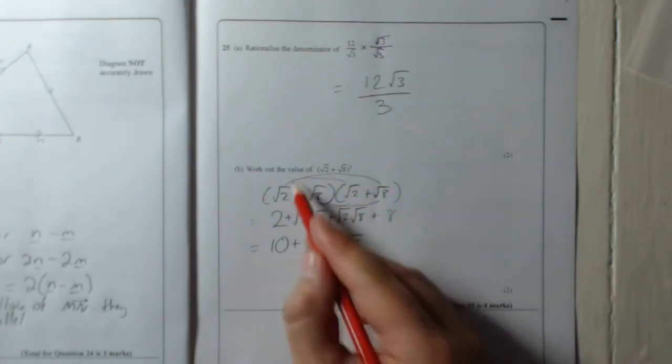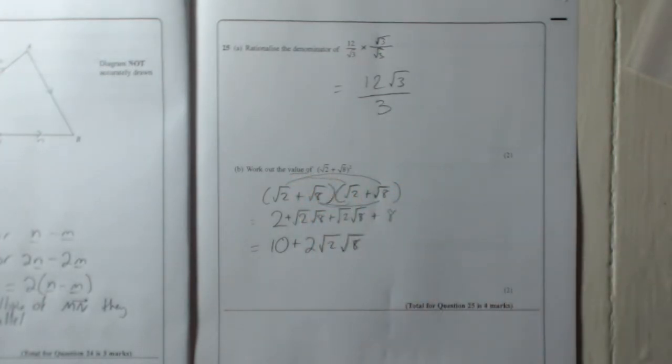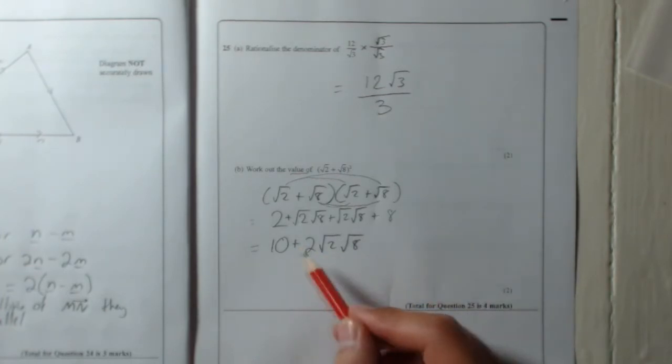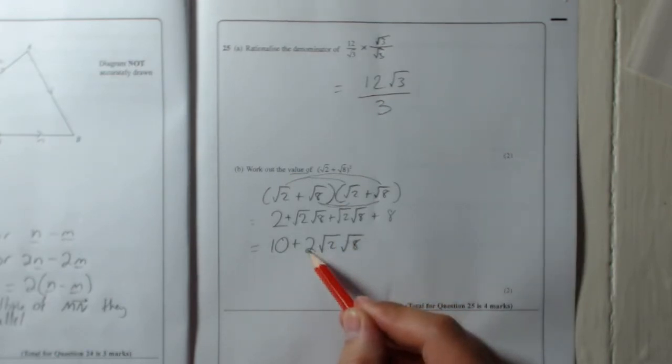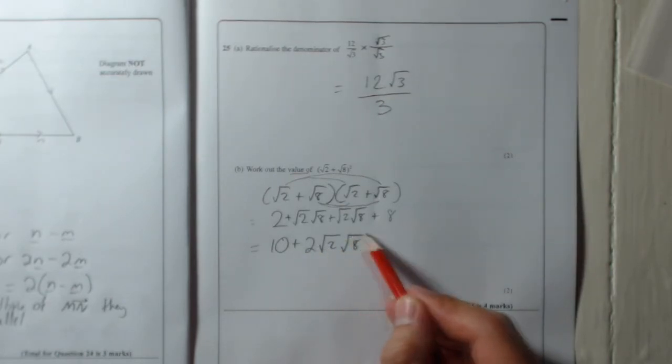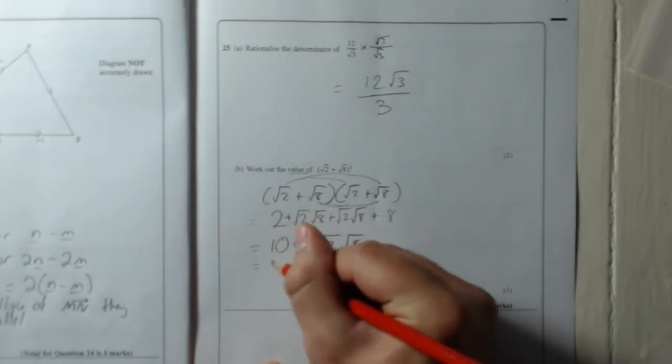Now it says work out the value. So that means you're going to get an actual answer - a simple number there. It's not saying simplify, it's working out an actual value. So if you look at it, you've got a 10, that's okay. And you've got this 2 times root 2 root 8. The only thing we can do with this is turn root 8 into something else.